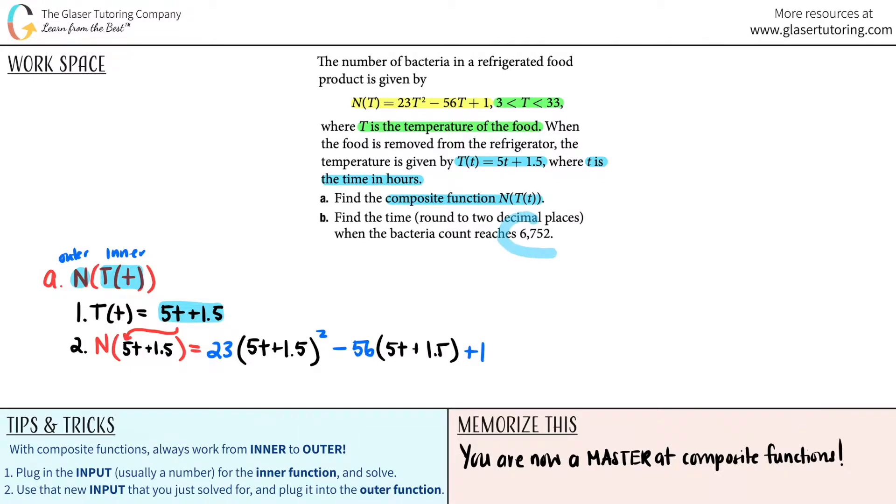For lack of time, I'm just going to leave it as this, mainly because we have a number that we have to solve for in part b, so it's going to be easier to work with it like this. So n(T(t)) = 23(5t + 1.5)² - 56(5t + 1.5) + 1. And there you go, this is the answer to the first part.